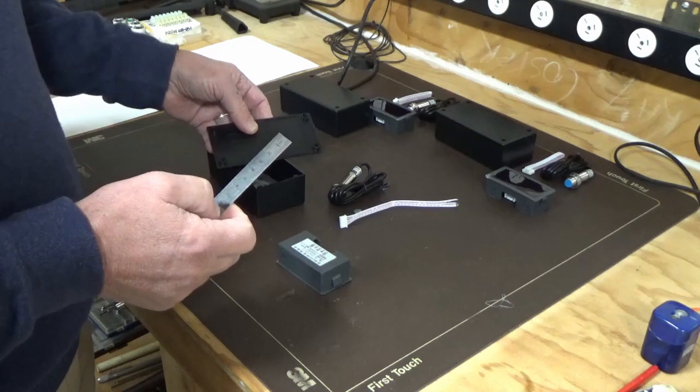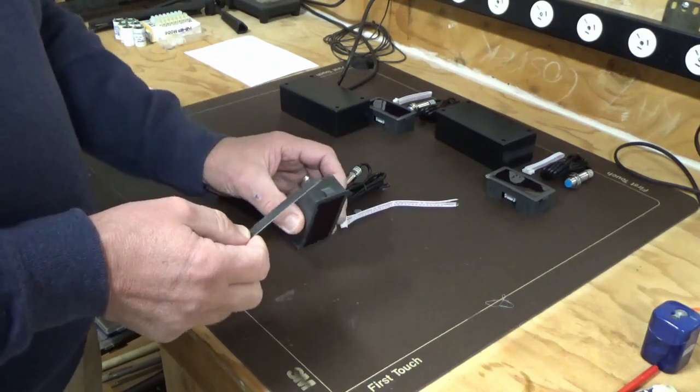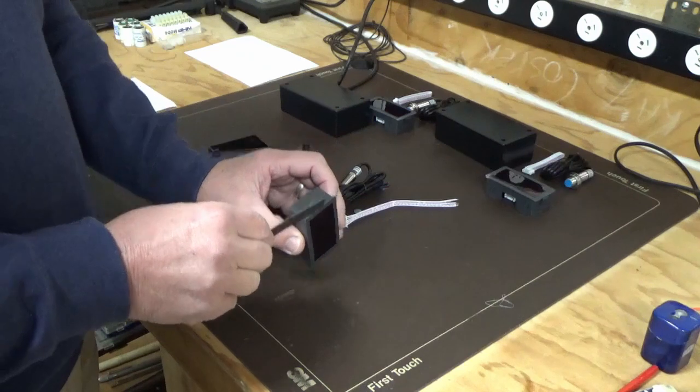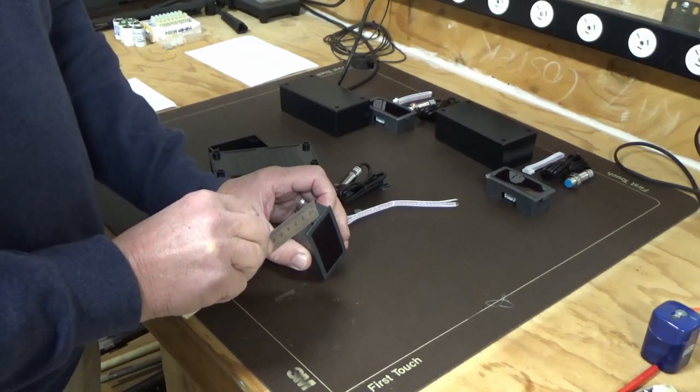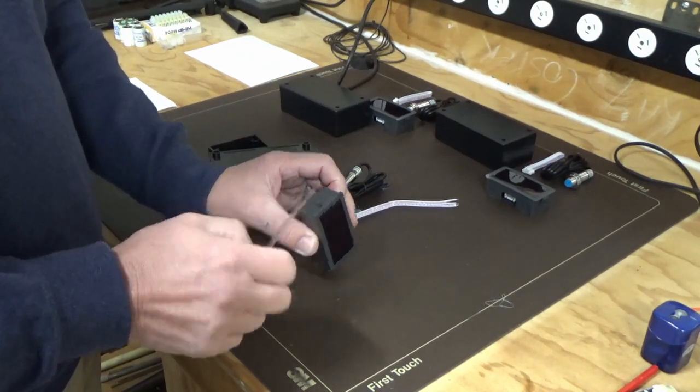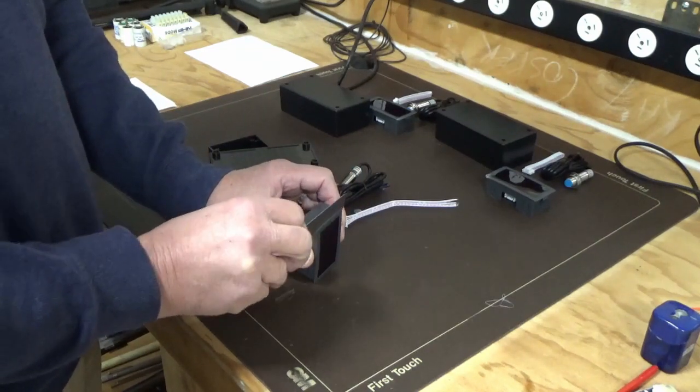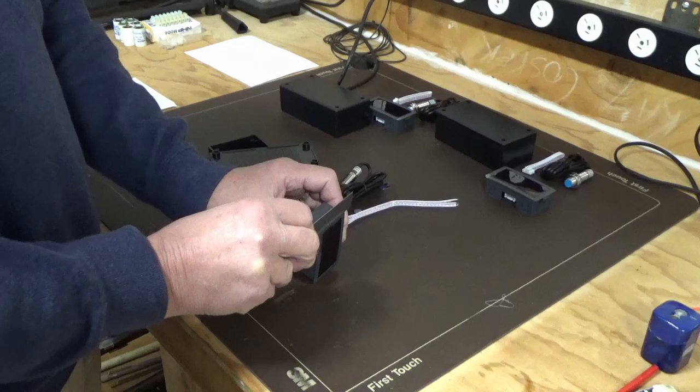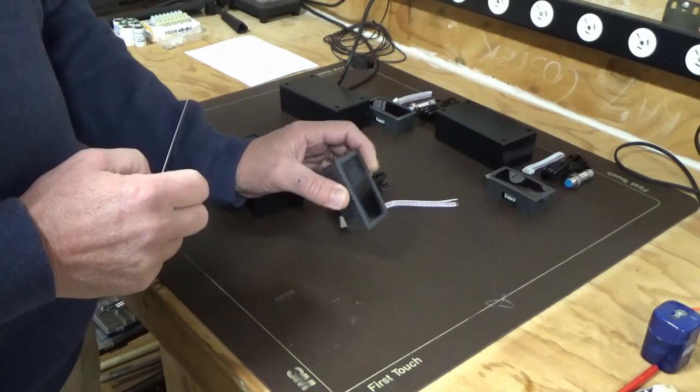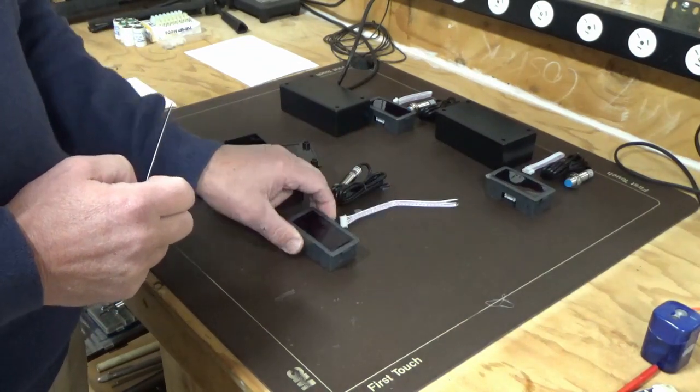We're going to have to take about two millimeters off this little catch here so that when this is pressed in, the actual front cover will sit in that gap there neatly and it won't let the unit rock around too much or at all.